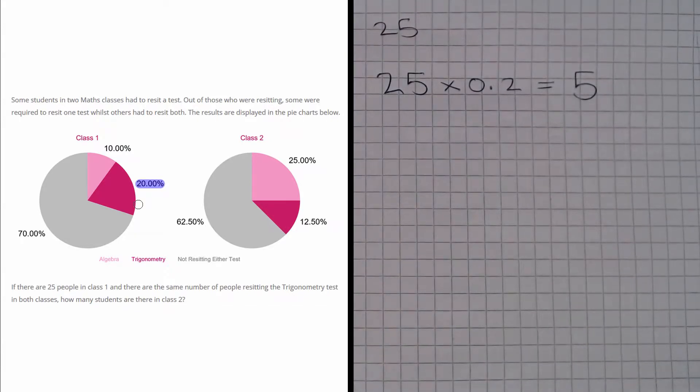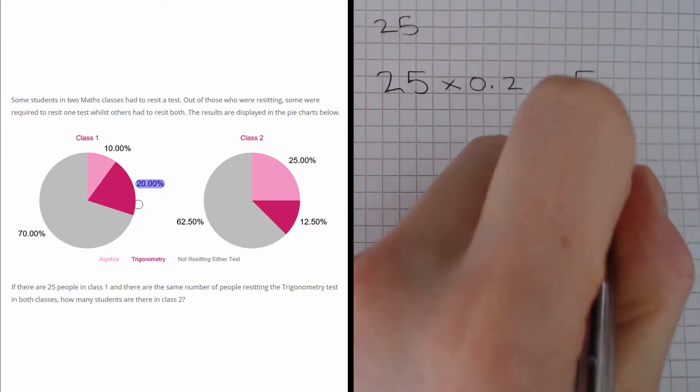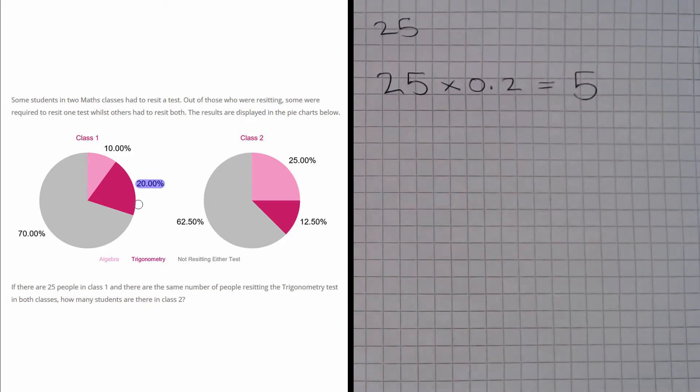But we are told that there are the same number of people resitting trig in both classes. So what we know is there are actually 5 people in class 2 who are also resitting trigonometry.